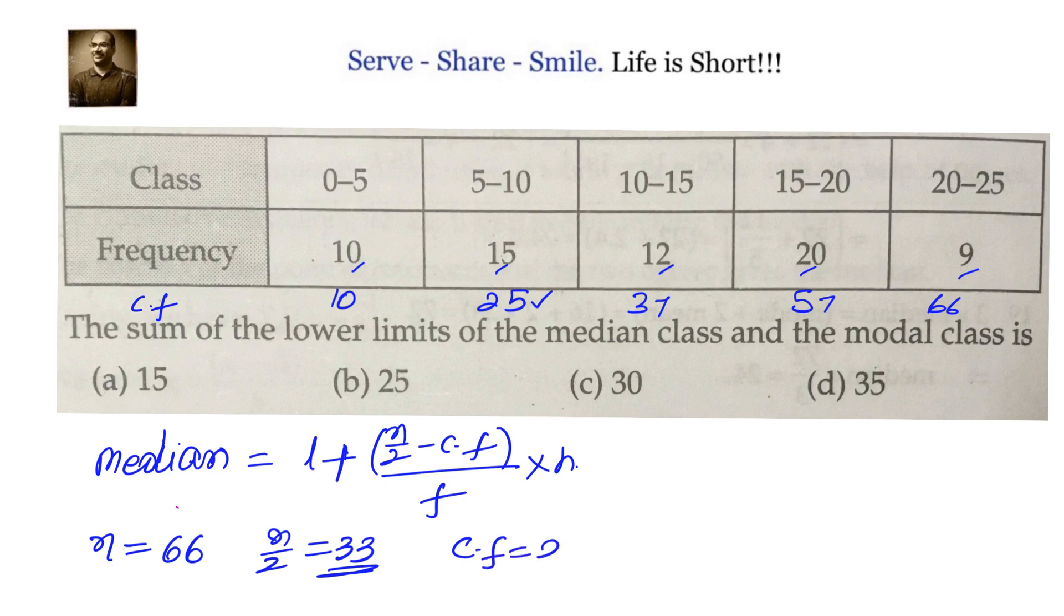be nearest to n/2. n/2 is 33. Nearest to 33, the value we have in cf column is 25. So we know that once we know the cf, when we go to the next